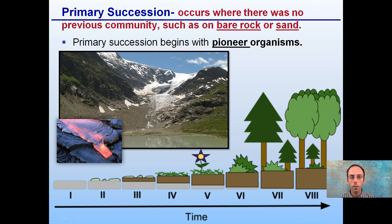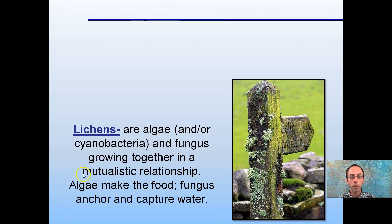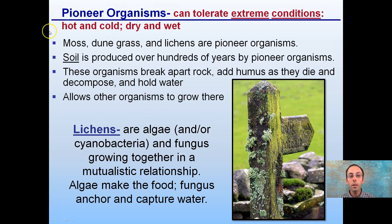Primary succession occurs where there are no previous communities, such as bare rock or sand. It begins with pioneer organisms. A lava flow would be an example of primary succession — we're starting with newly exposed bare rock where basically nothing was there. These pioneer organisms can tolerate extreme conditions, extremely hot or extremely cold. Moss, dune grass, and lichens are examples of pioneer organisms. Soil is produced over hundreds of years by these pioneer organisms, which break apart rock and humus, die and decompose, and hold water, allowing other organisms to grow.